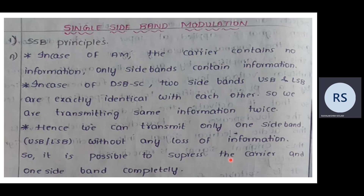In the case of double sideband suppressed carrier (DSB-SC), we have an upper sideband and a lower sideband. These two sidebands are identical to each other, which means we are transmitting the same information twice whenever we use double sideband suppressed carrier.